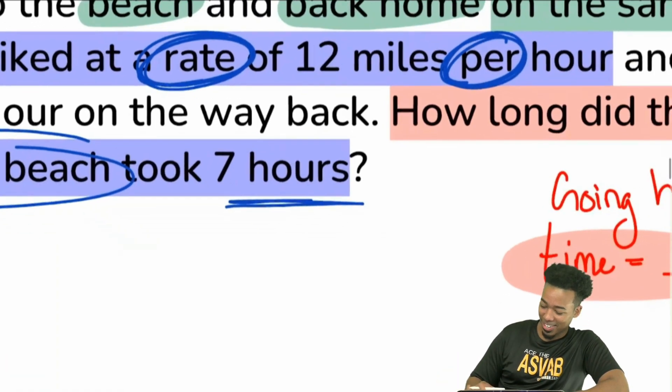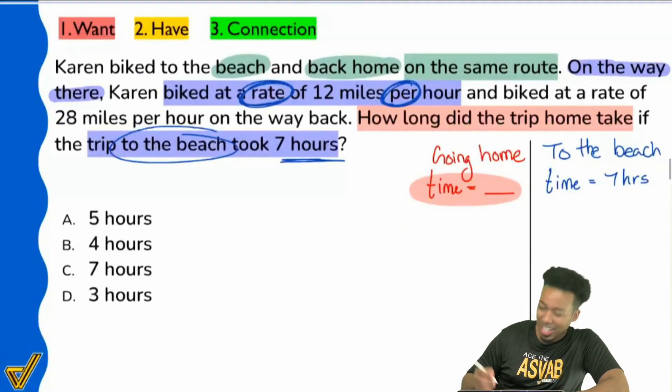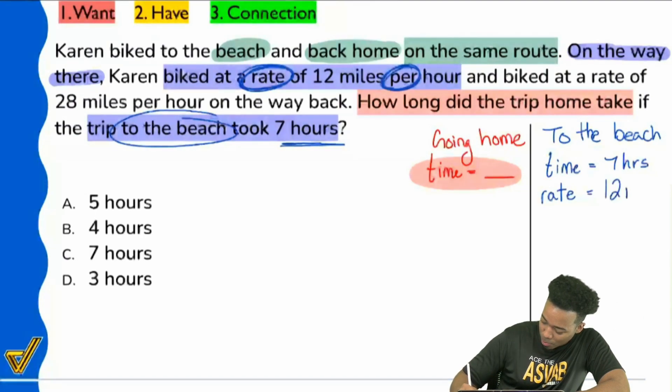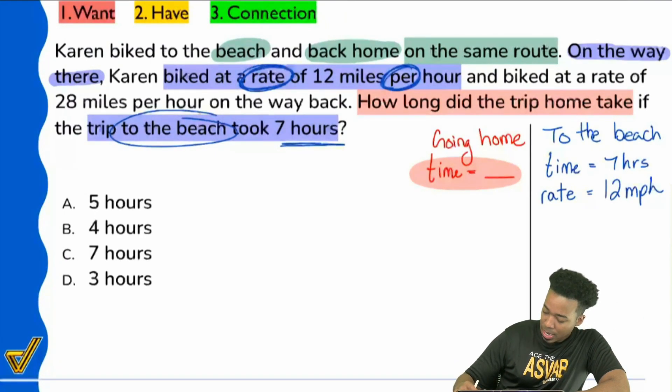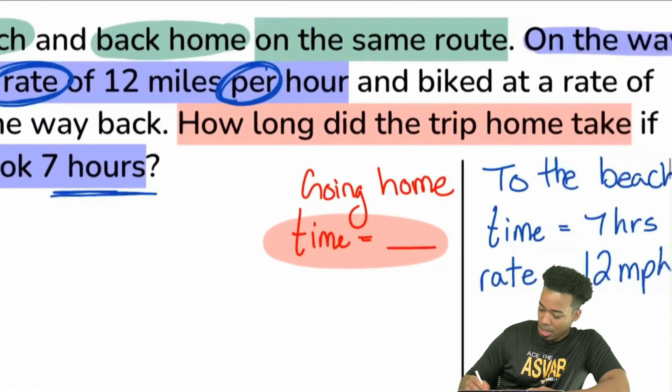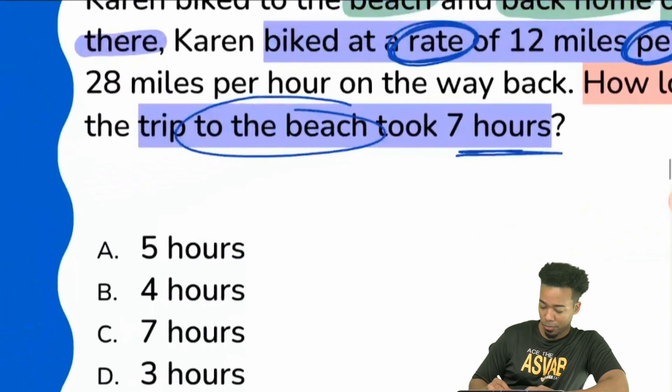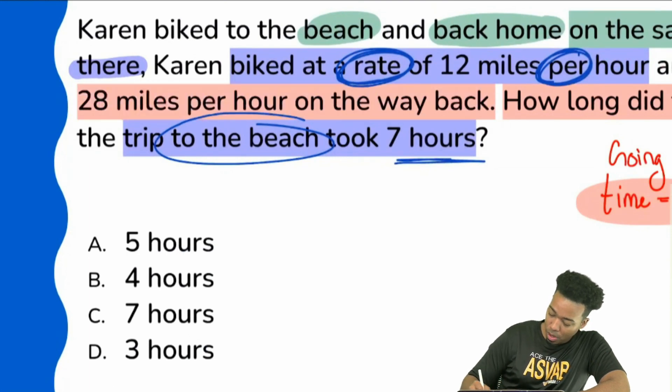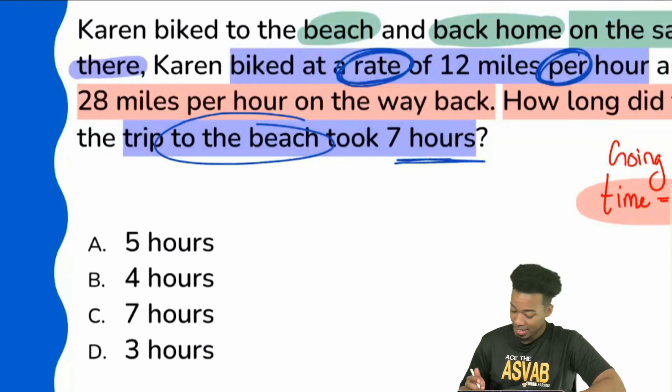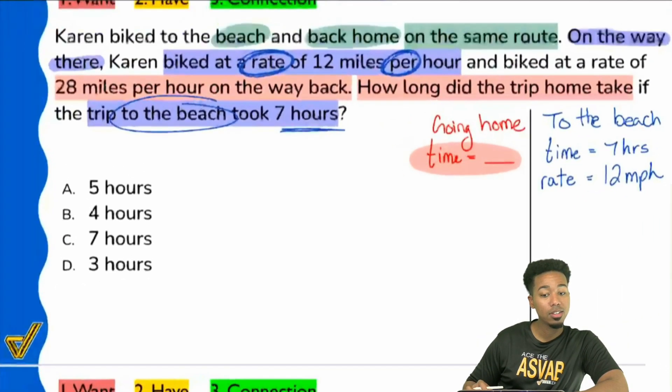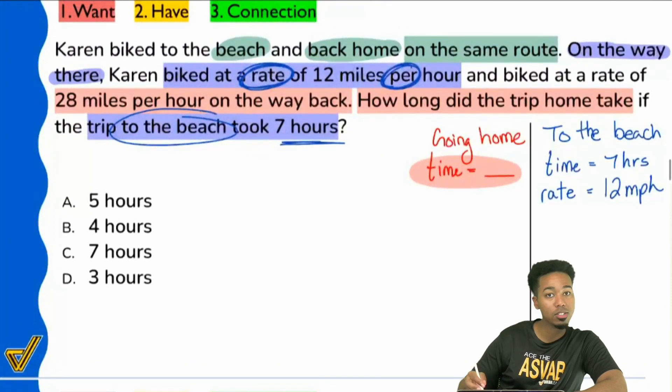Good. So I'm going to write that in blue. That's going to the beach. Hang tight. We're collecting all the information. So my rate is 12 miles per hour. And then it says, and biked at a rate, let me go and highlight it for you, and biked at a rate of 28 miles per hour on the way back. Okay, 28 miles per hour on the way back. So going home, everybody, that's where that would belong. Going back, going home, that's where that belongs. That's where that rate belongs.